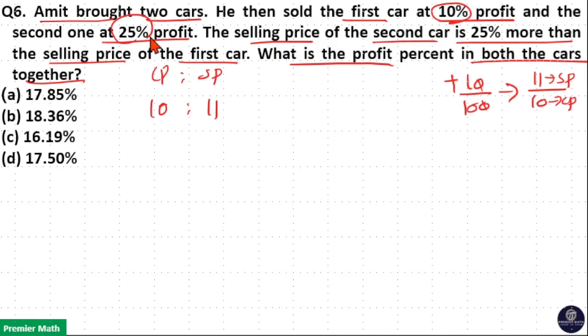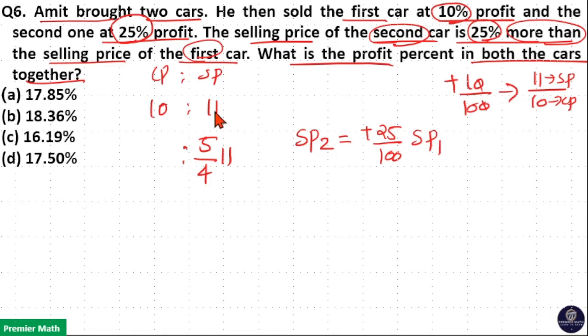Amit sold the second car at 25 percentage profit. Before writing the ratio look at the third relation. Selling price of second car is 25 percentage more than the first car. 25 percentage more means 5 by 4, so 5 by 4 of first car means 5 by 4 of 11. Consider selling price of the second car as SP2 which is 25 percentage more, plus 25 by 100 of the first car. Selling price of the first car is 11 part, so SP1 is 11. 25 goes 4 times in 100 plus 1 by 4 means 5 by 4, so 5 by 4 of 11 is the selling price of second car.